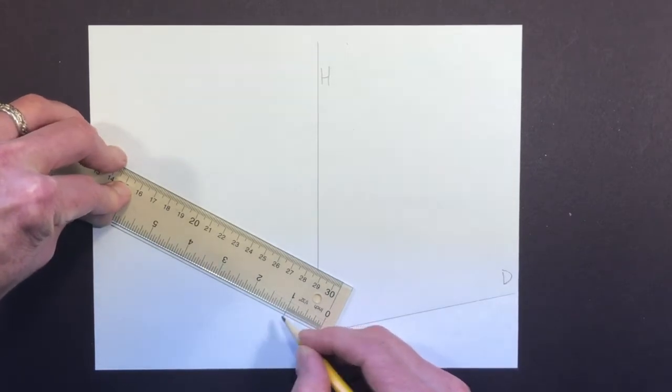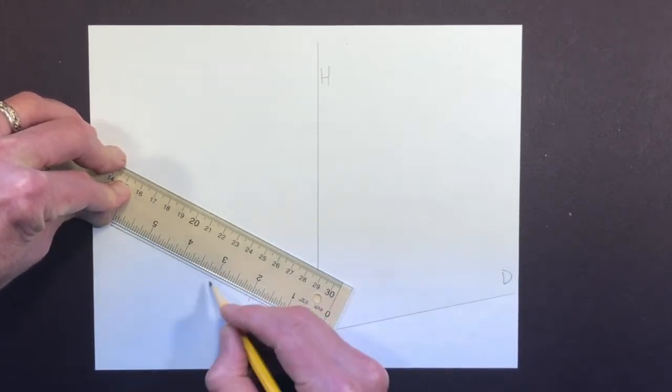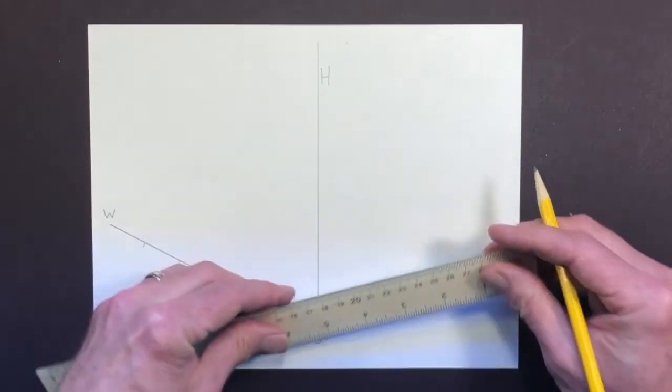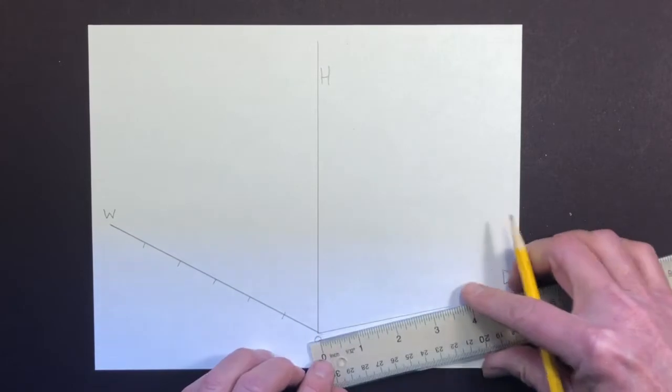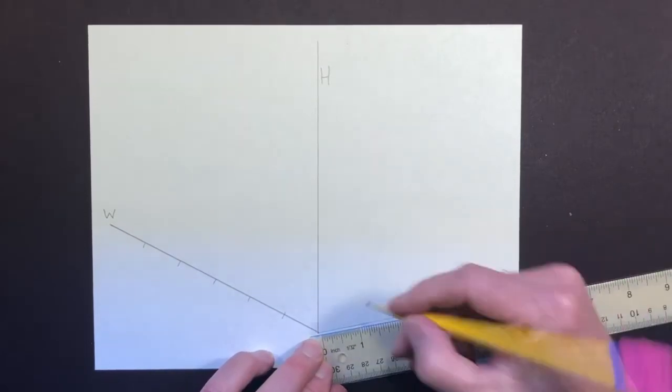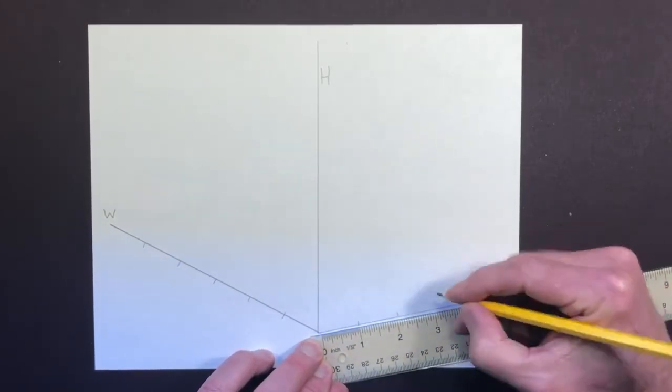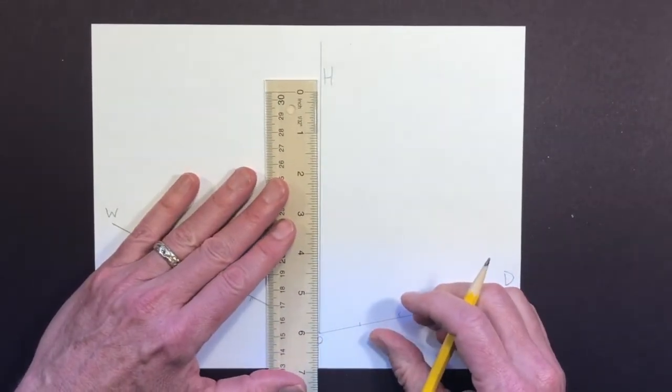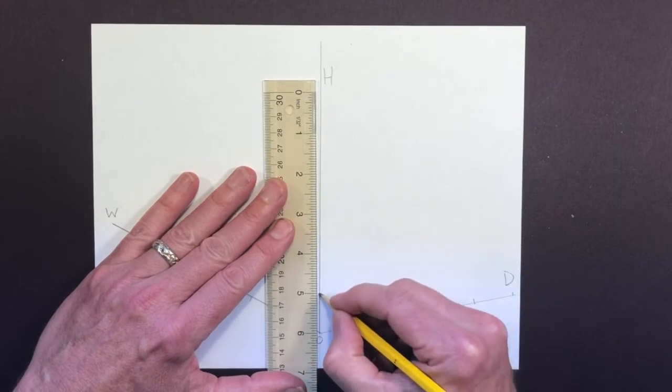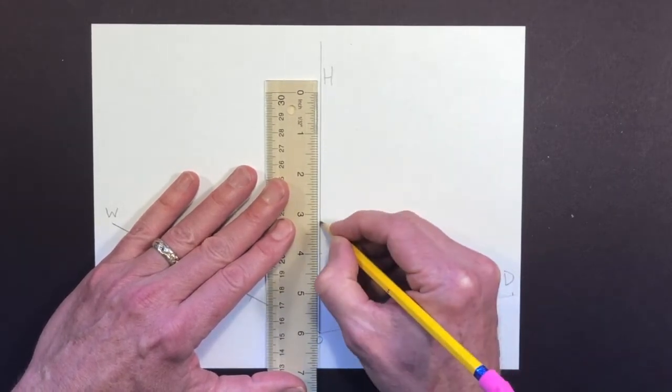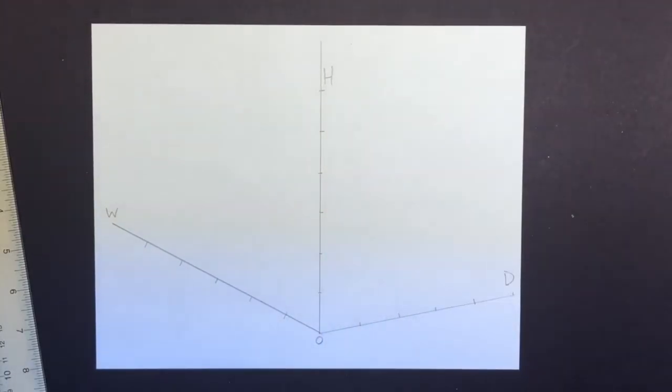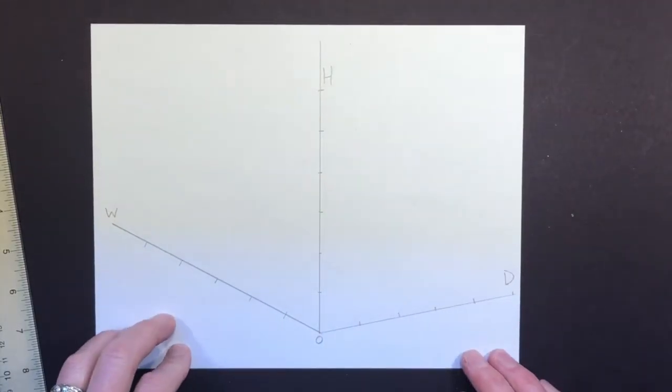And now using the ruler, I'm going to put some measurements on my lines. And I'm just going to use inches. One, two, three, four, five. And the same thing here. Remember, if I'm going too fast, you can always pause the video and rewind and take a look. Take a look at this. And this is a good place for you to make your first stop.